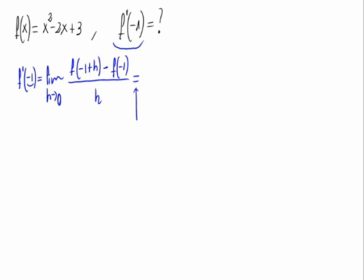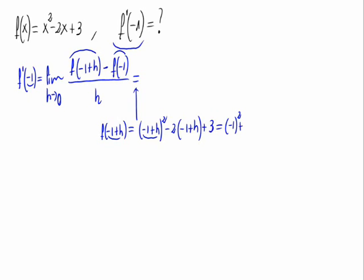Let's calculate f of minus 1 plus h by substituting x with minus 1 plus h. So we would have minus 1 plus h, squared, minus 2 times minus 1 plus h, plus 3. Expanding: minus 1 squared plus 2 times minus 1 times h plus h squared, plus 2 minus 2h plus 3.